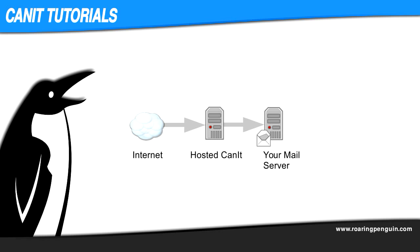Hosted Canet sits between the Internet and your back-end mail server. It takes all your email in, filters it, and passes filtered mail out to your back-end server via SMTP. This means that all we can see is SMTP traffic, and all we can count are email addresses.